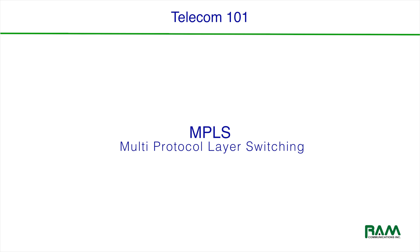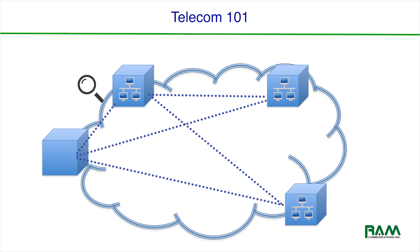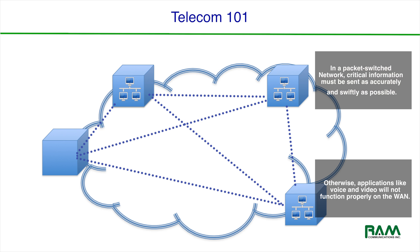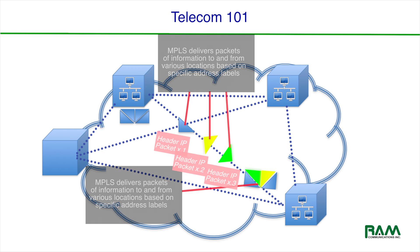MPLS, or Multi-Protocol Layer Switching, uses virtual paths to link locations together. MPLS is unique in that it is a Layer 2 service that can handle Layer 3 applications at faster speeds. Like a point-to-point link, these paths provide speed and private connection, but they also offer a much more flexible and precise way to distribute traffic from user to user, as you'll see in the illustration in front of you.